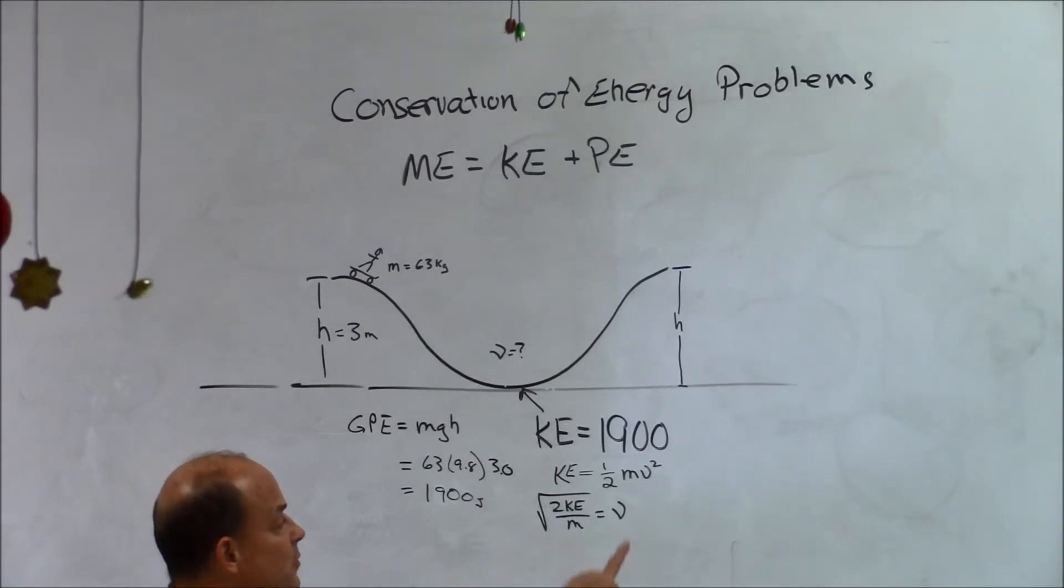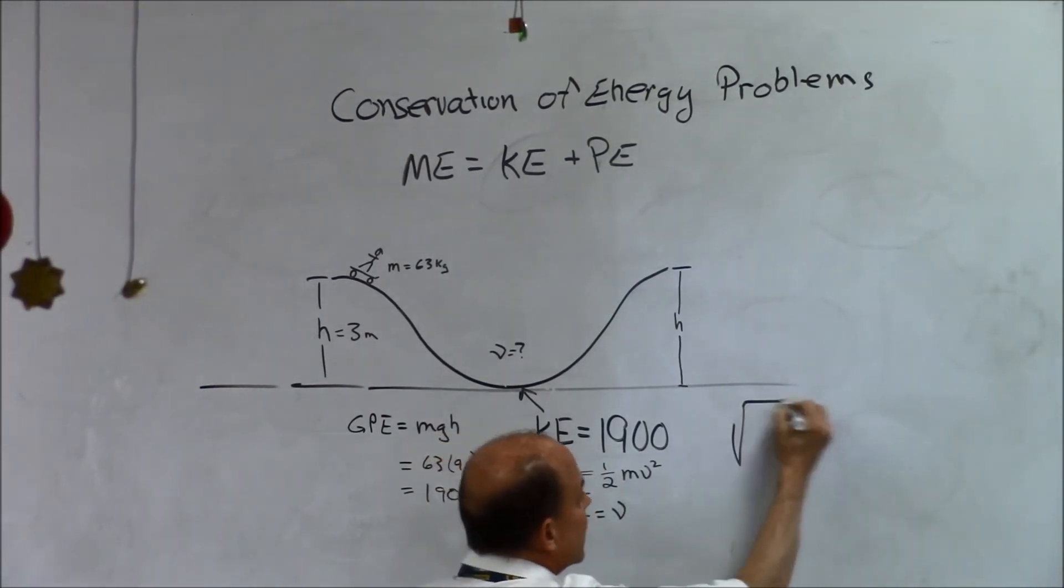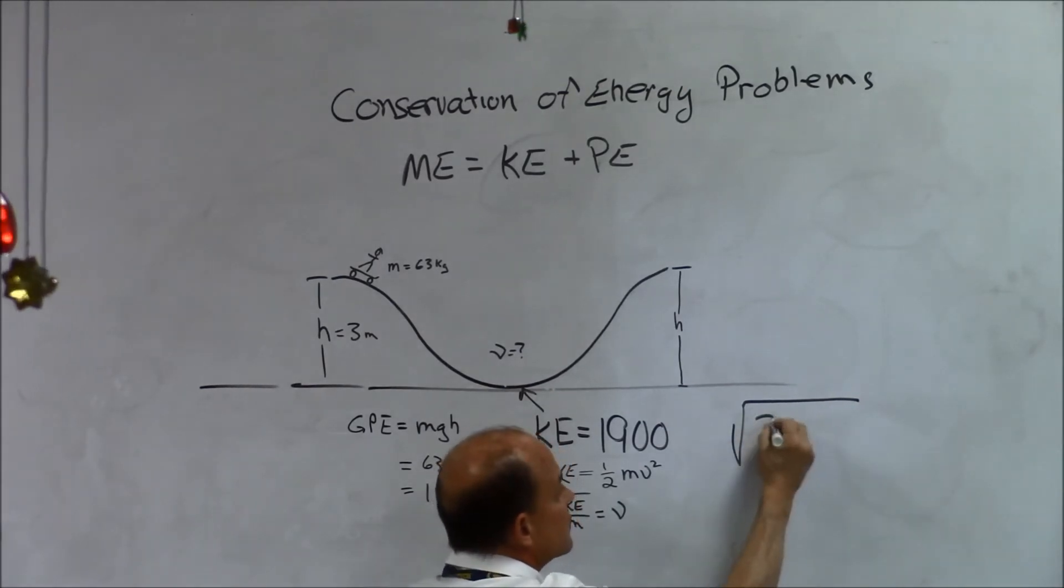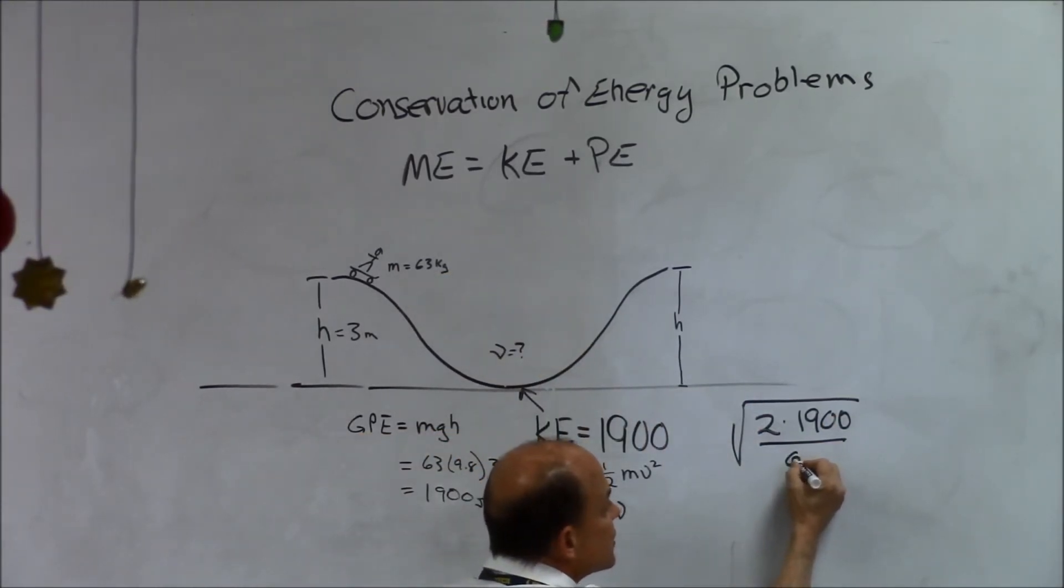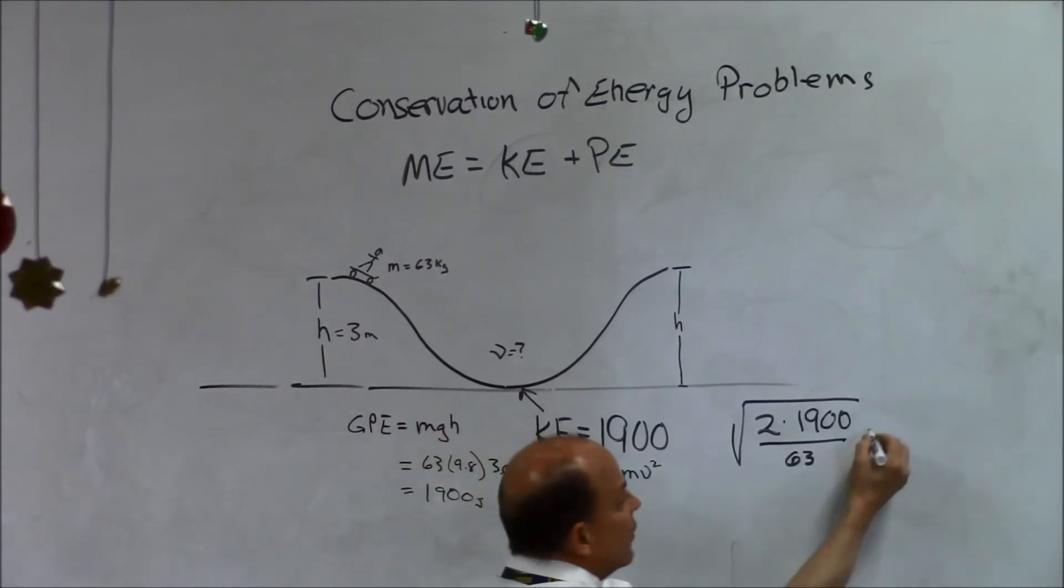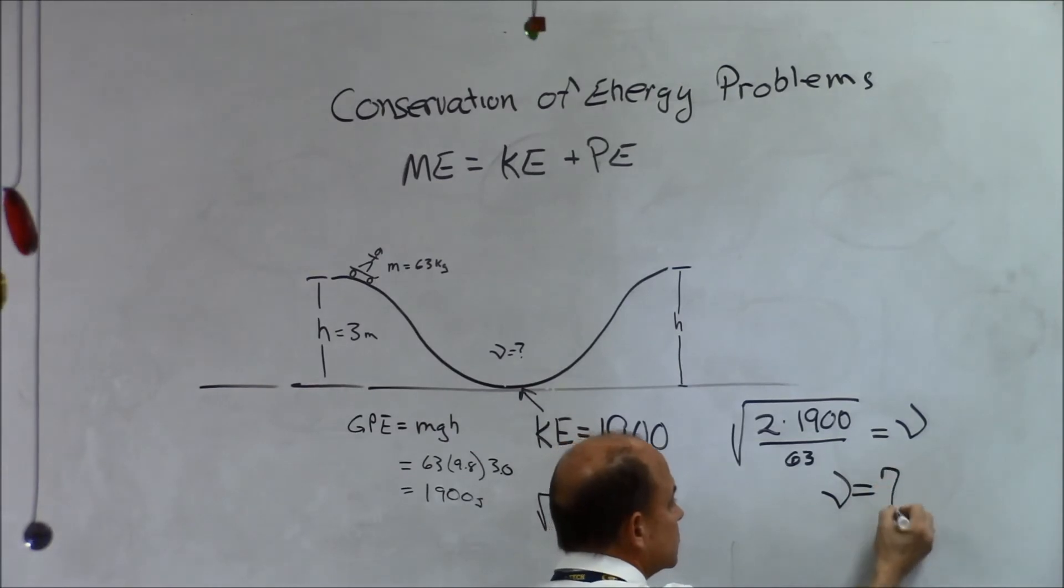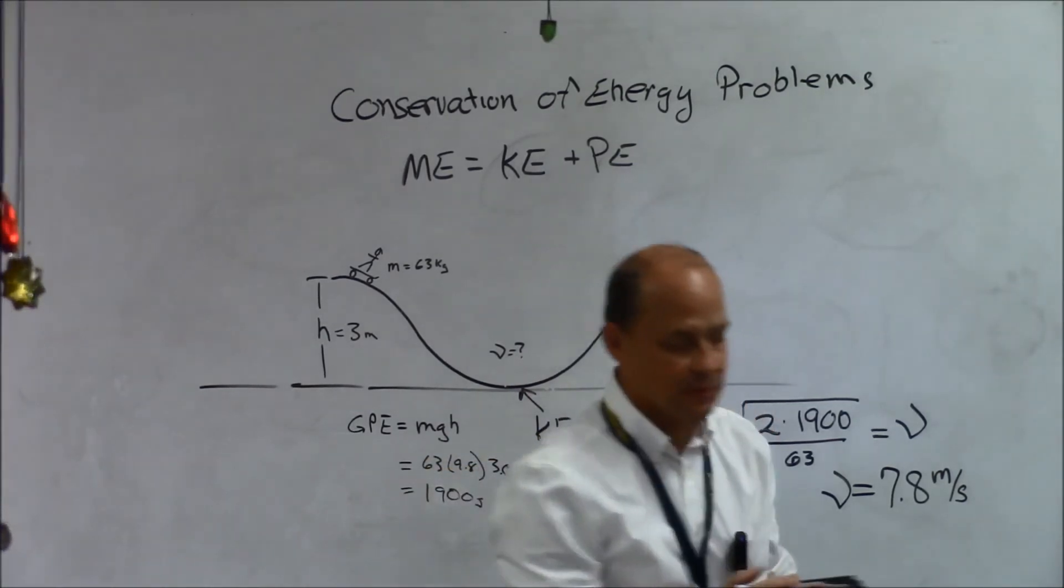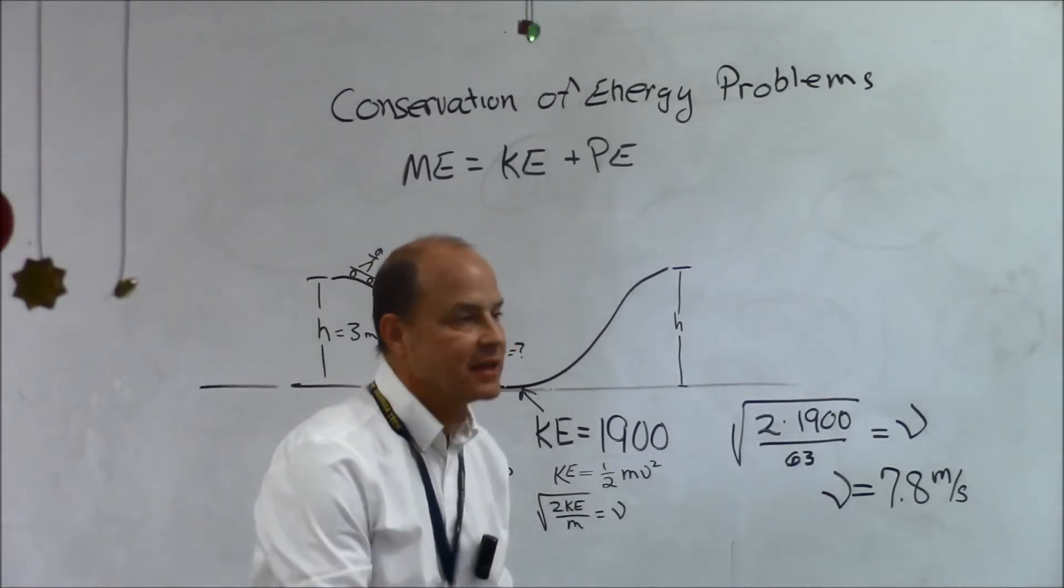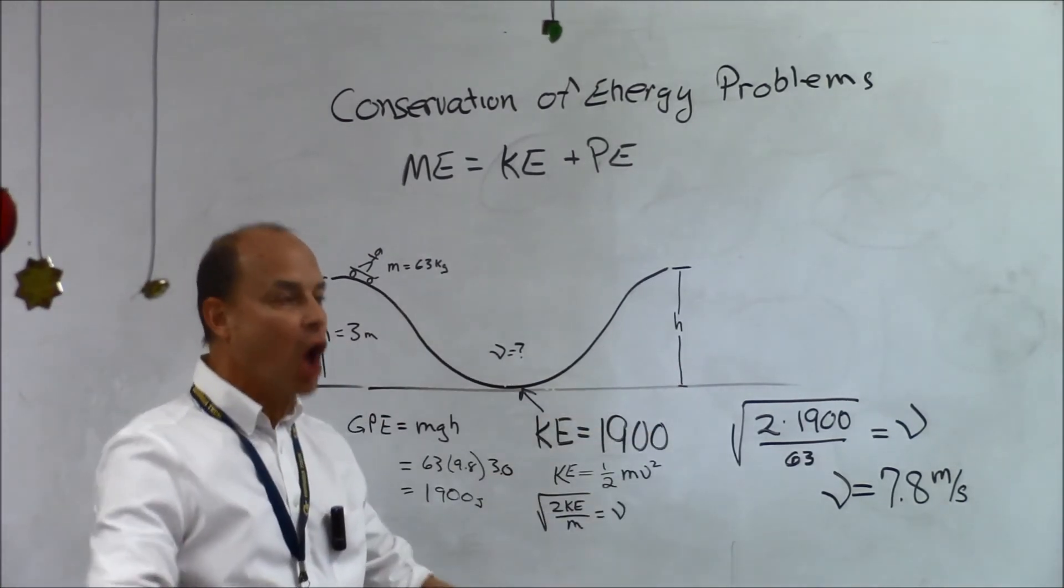The velocity is equal to the square root of two times the kinetic energy divided by the mass. Now, I have my equation in terms of V, which is what I want to find out. I know what my KE is, and I know what my M is, and so now we substitute and solve. So, I'm going to be taking the square root of two times 1900 divided by the mass of the guy, which is 63 kilograms. So, it's going to be 2 times 1900, which is 3,800, which is when you divide that by 63. Now, he's at the bottom of the hill. All of his gravitational potential energy has been turned into kinetic energy at the bottom of the hill.